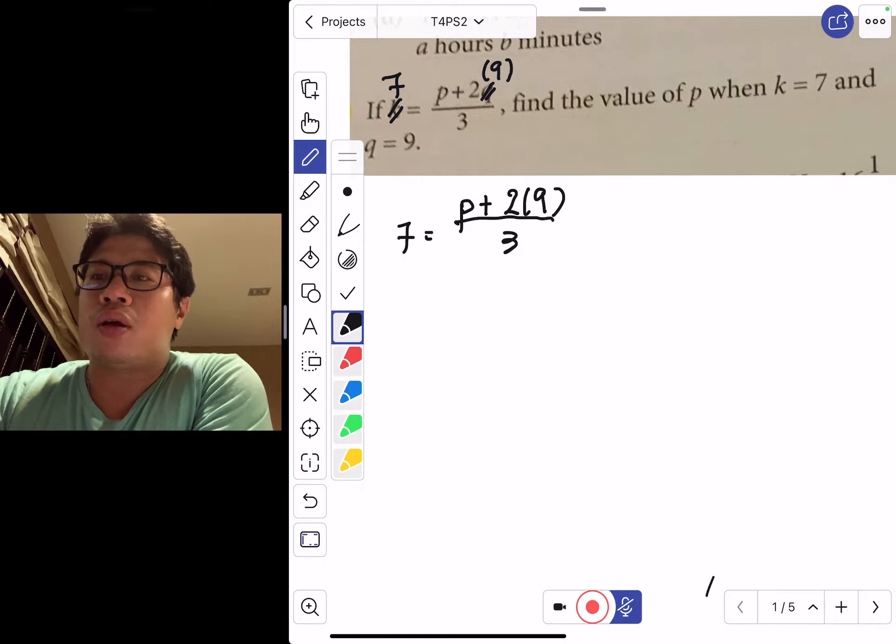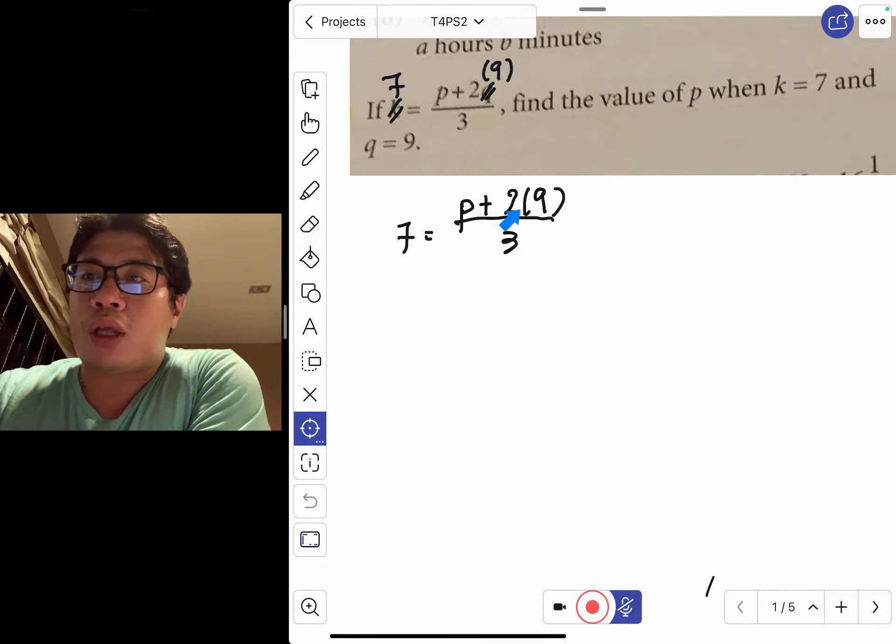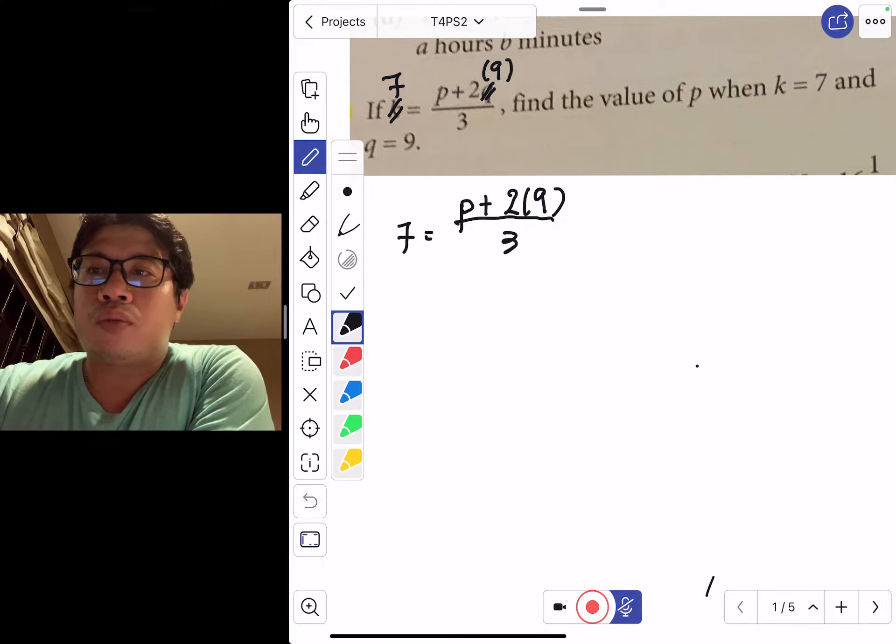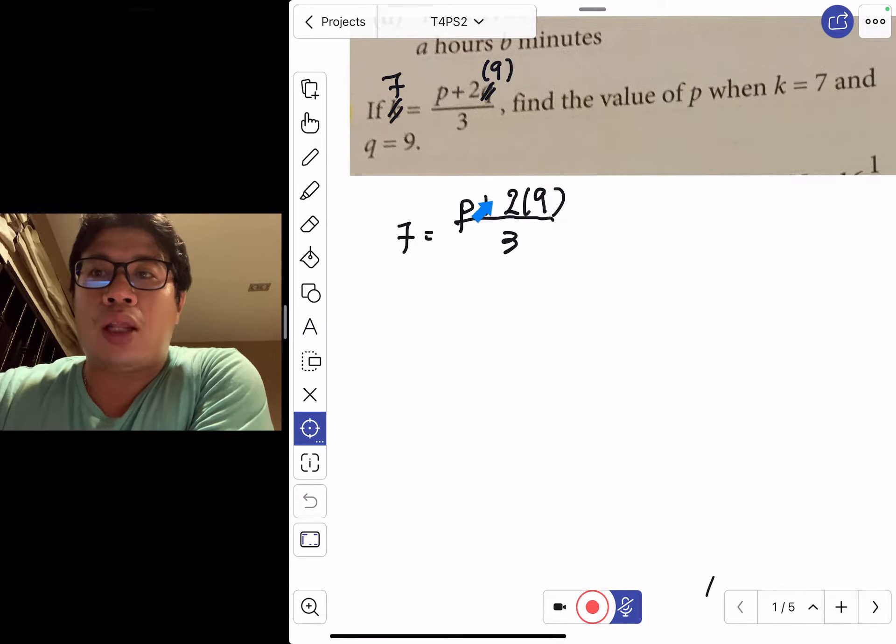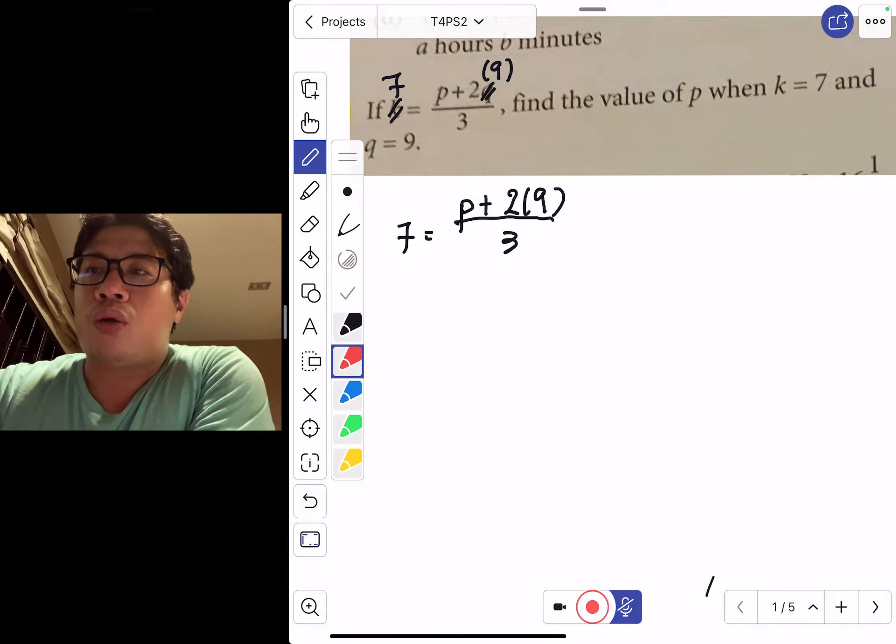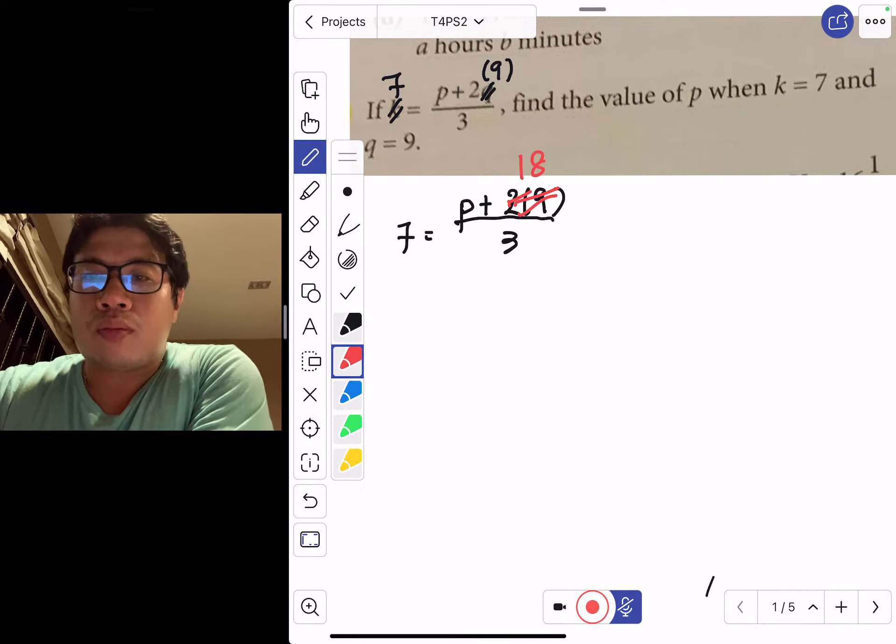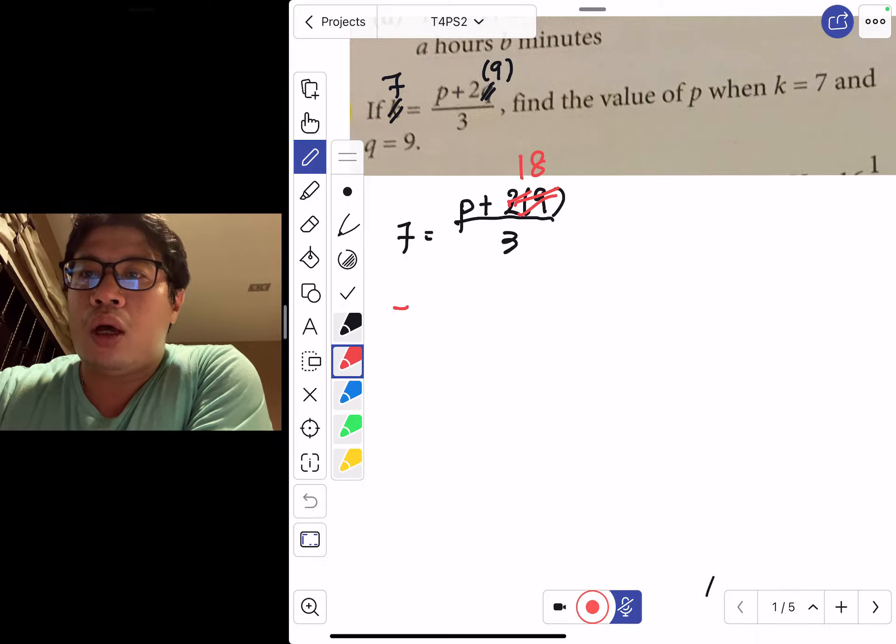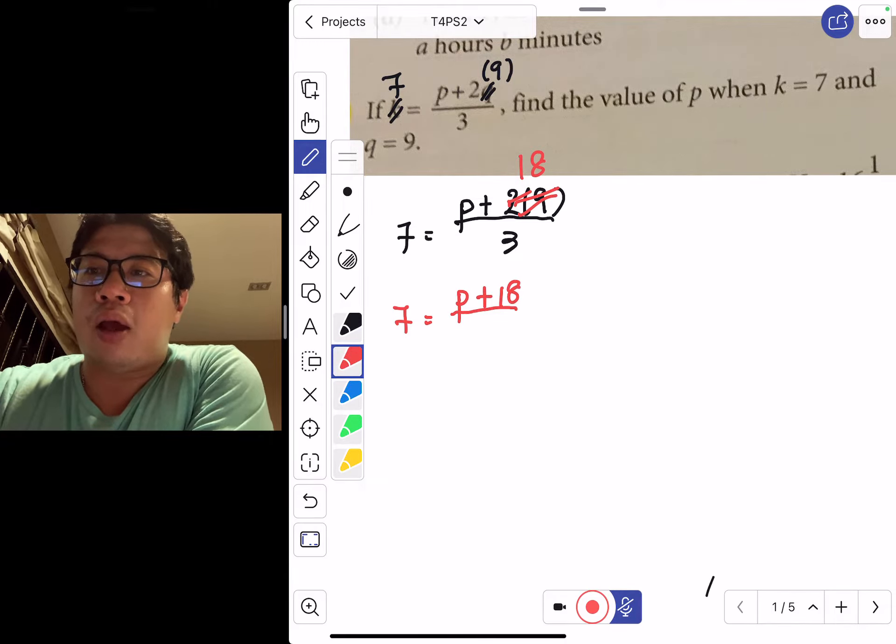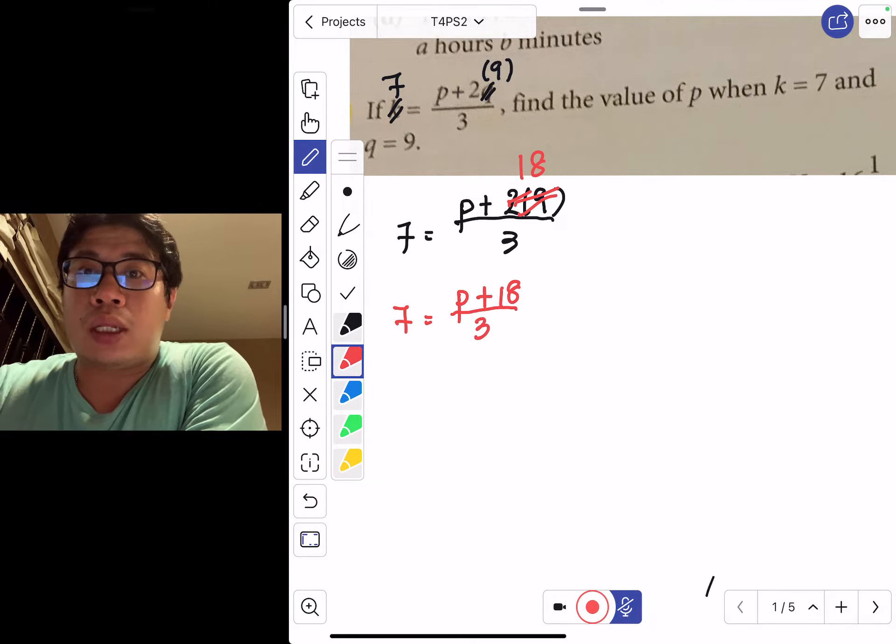Now BODMAS will tell you that if you take 2 and 9, multiplication comes before addition, so it means that you are looking at 2 times 9, which equals 18. So 7 equals p added to 18 divided by 3.